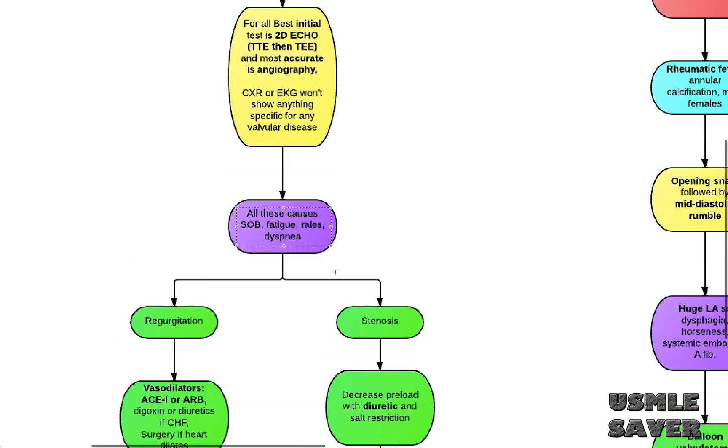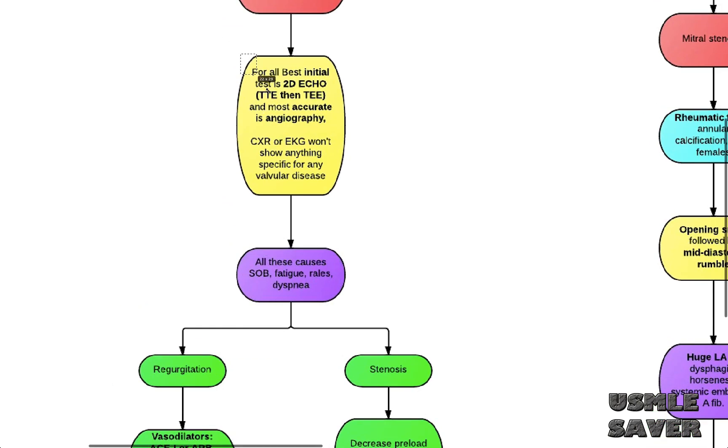Next common thing is diagnostic test. For all valvular heart disease, best initial test is transthoracic echo, followed by transesophageal echo, which is more specific. Angiography is the most accurate test for all valvular heart diseases. So I'm not going to tell you in each disease that best initial test for this is echo and most accurate test is angiography.